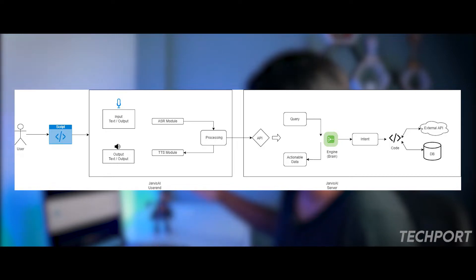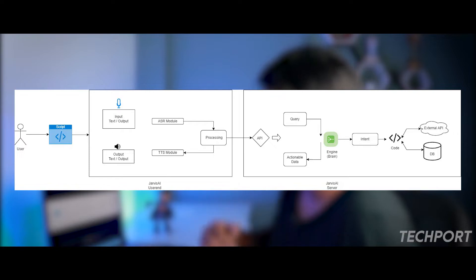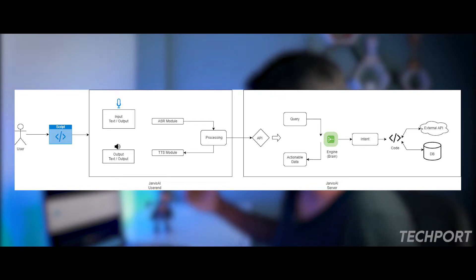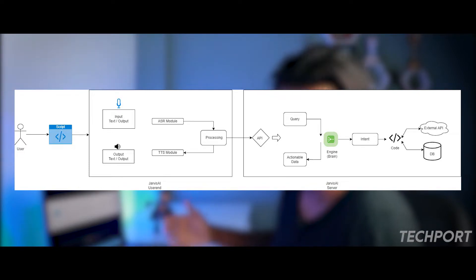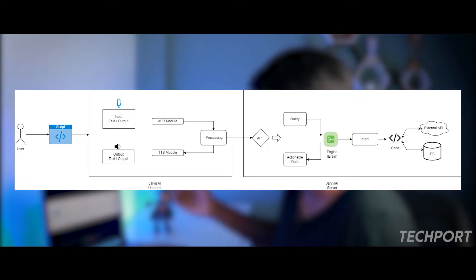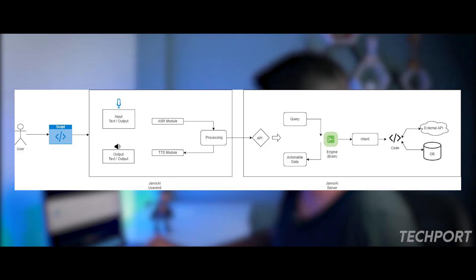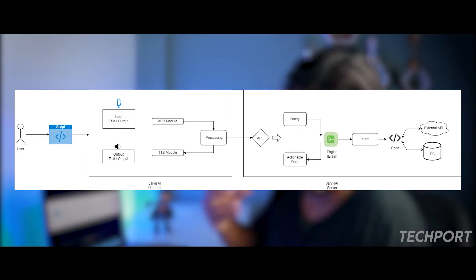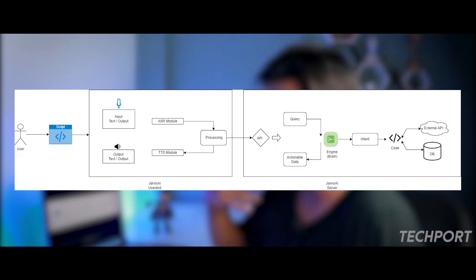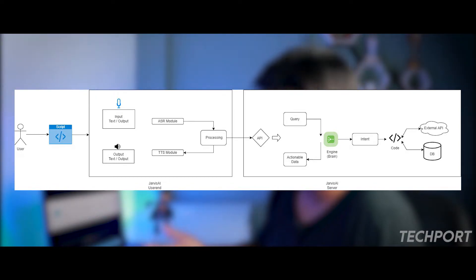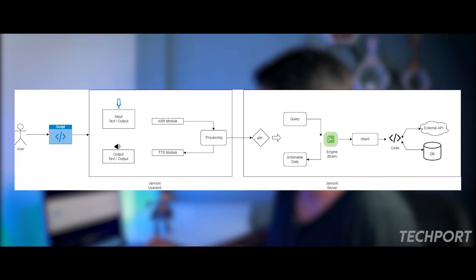Jarvis AI, as the brain, determines the intent and selects the appropriate skill set, sourcing data from external APIs. The response is returned as code or data, back to your system, and you can then use text-to-speech to produce the output as sound. So this is the Jarvis AI architecture.